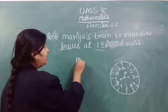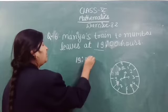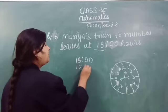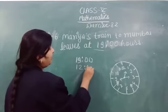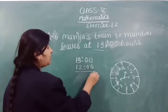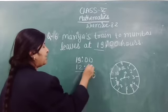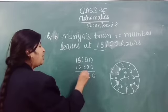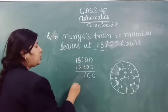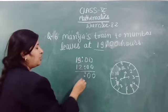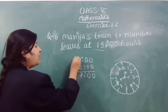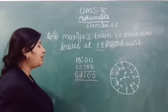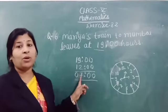So, 19 hours minus 12 hours. 0 minus 0 is 0, 0 minus 0 is 0, 9 minus 2 is 7, 1 minus 1 is 0. So here the time is 7 o'clock.